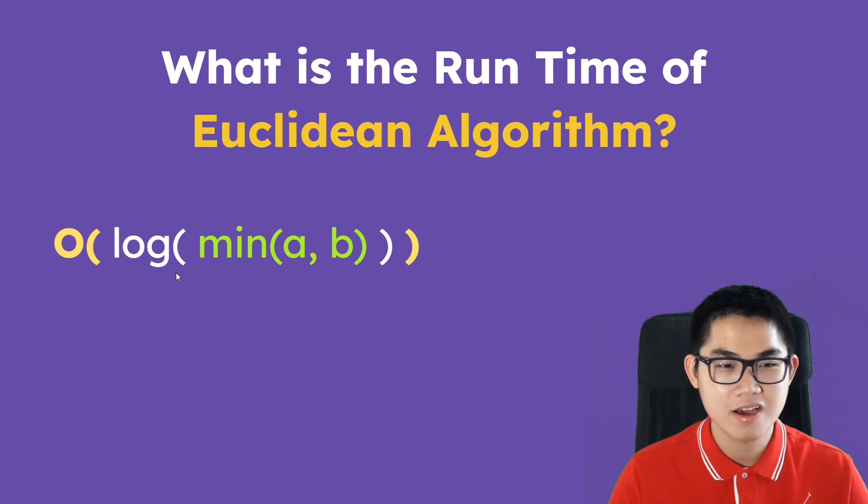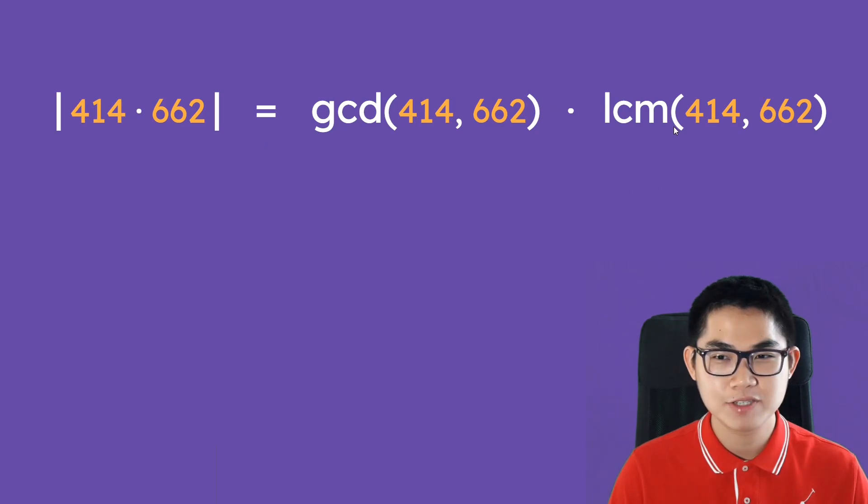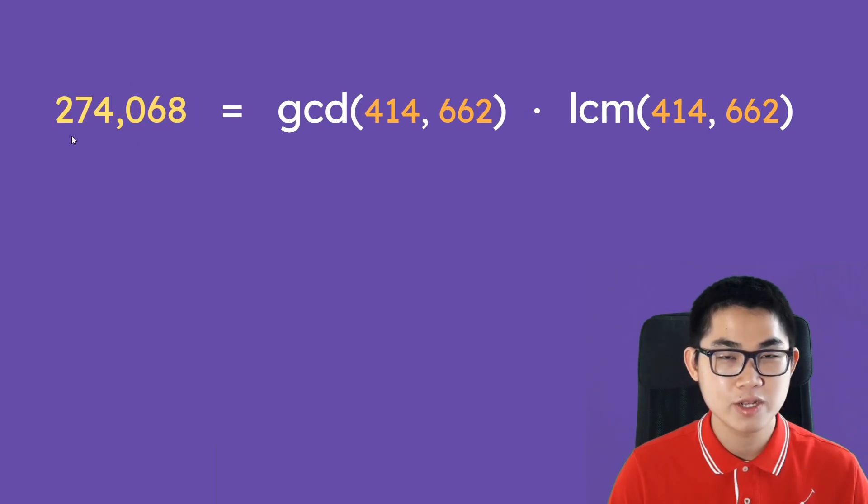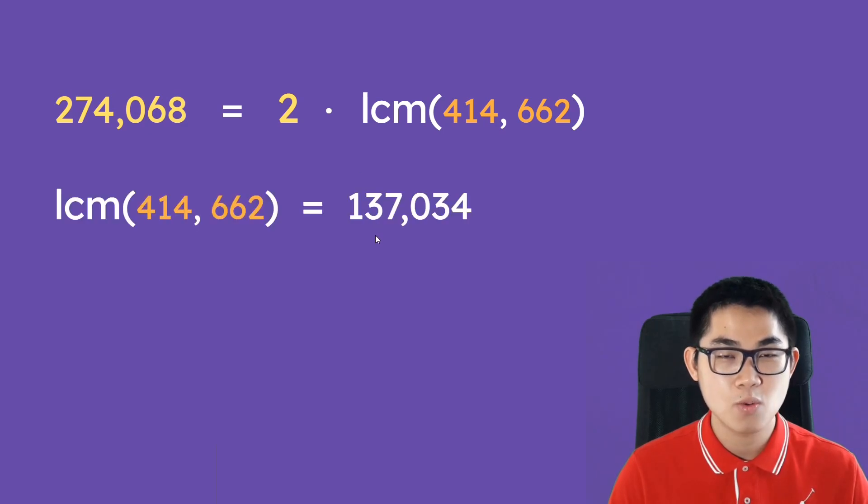The last thing I want to do today is explain how to find the LCM of two numbers. So this here is the formula to find the LCM. We already know how to find the GCD. So let's say we want to find the LCM of these two numbers. The first step is to take these two numbers and multiply with each other, and we're going to get 274,068. And then we find the GCD, which is 2. Then divide both sides by 2 and you get 137,034. And that is the LCM of these two numbers.